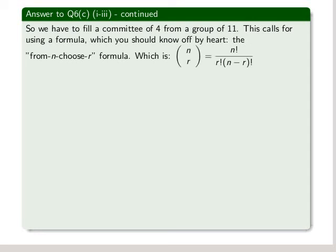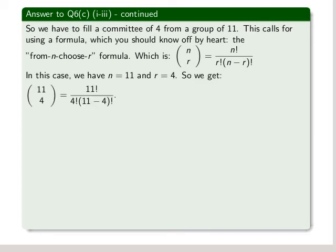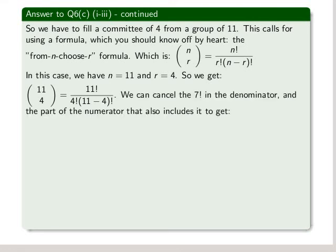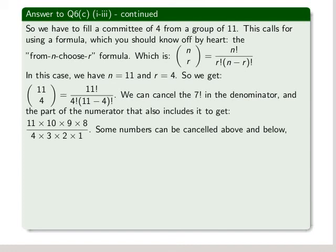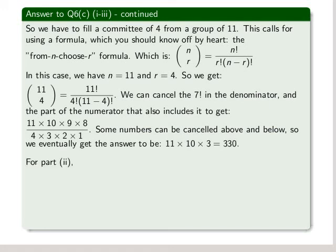Which is n over r in big brackets equals n factorial over r factorial times n minus r factorial. In this case, n is equal to 11 and r is equal to 4. So we get 11 over 4 in big brackets, and that's factorial 11 over factorial 4 times factorial 11 minus 4. We can cancel the factorial 7 in the denominator and the part of the numerator that also includes 7 factorial. So we get 11 times 10 times 9 times 8 all over 4 times 3 times 2 times 1. Some numbers can be cancelled above and below here, so we eventually get the answer to be 11 times 10 times 3, which equals 330.